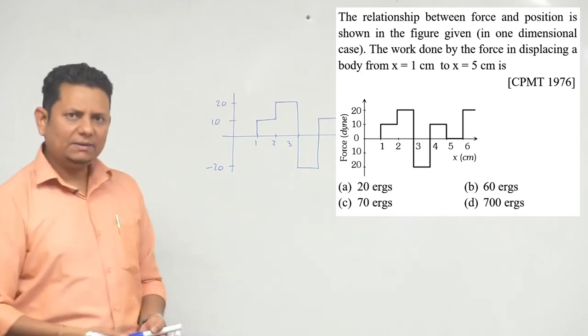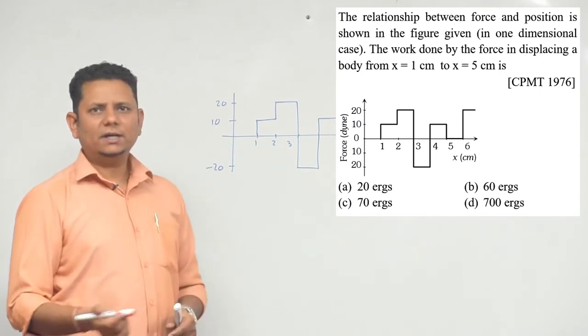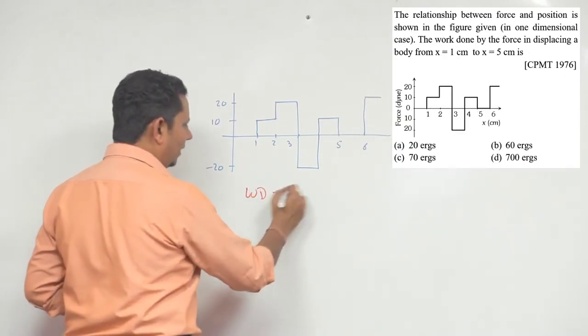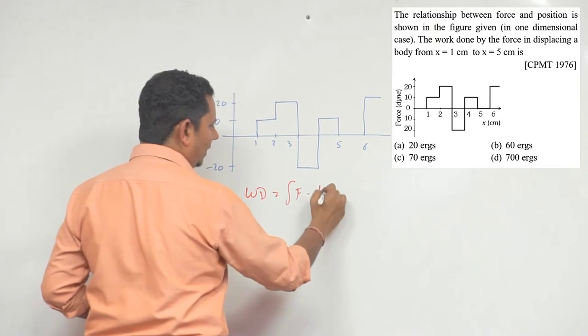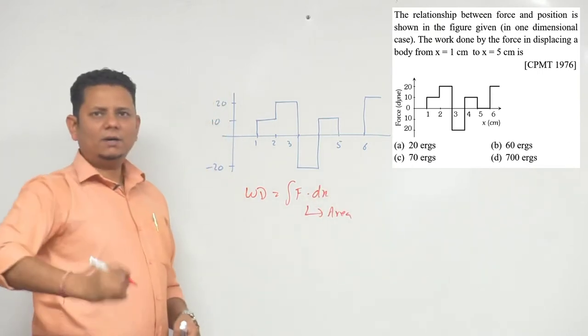This is a very easy question. The work done will be nothing but the area under the force and displacement curve. By definition, we know that work is F dot dx, so this means area under the fdx curve.